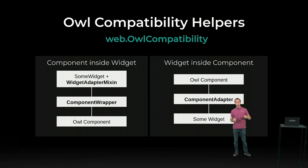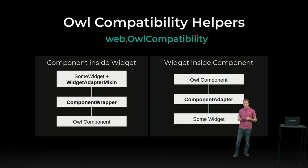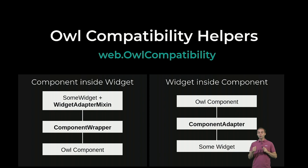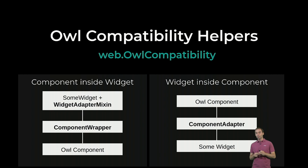The two harder cases are component inside widget and widget inside component. There are significant problems, and solving them manually is technically difficult — you need to keep track of many details. To help with that, we have made new helpers: a mixin and two components exported in an OWL compatibility file. They are used to solve exactly this problem and ensure that you can work from a component inside a widget or the other way around.